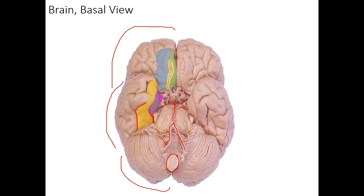Then you can see the posterior communicating arteries on either side, which connect up with the middle cerebral arteries. And here we can see the internal carotid arteries on either side. Heading anteriorly, behind the optic tract, you cannot see it in this picture, but the anterior cerebral arteries (ACA) and the anterior communicating artery will be right about there. From this view we can see the optic tract and the optic chiasm and the optic nerve right there, so the ACA is deep to that and not visible from this view.